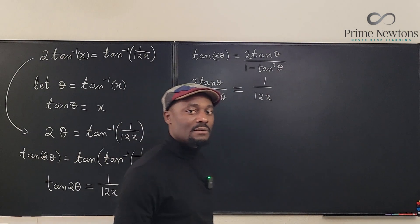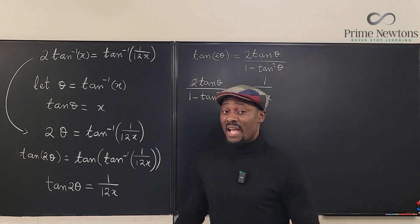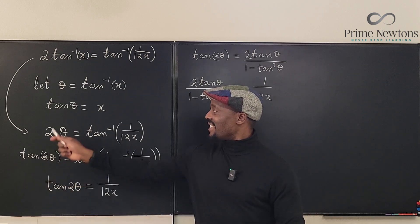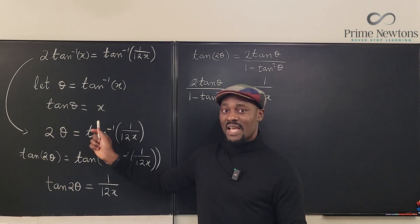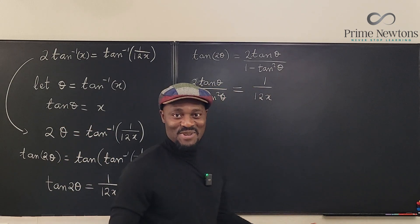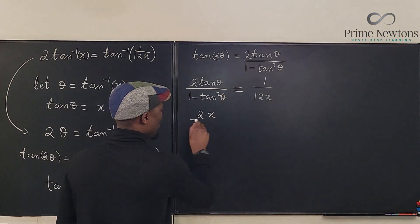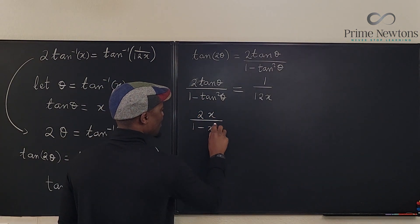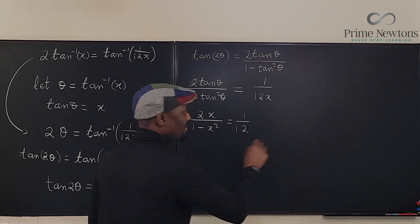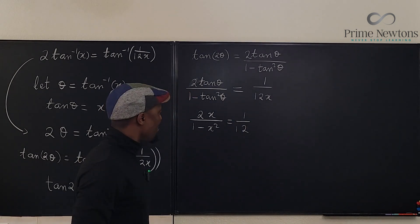Now tell me what is tan theta? Go back to the beginning. Remember that substitution I made. I said tan theta is equal to x. There we go. So I can come here and say 2x over 1 minus x squared equals 1 over 12x. And everybody can solve this. Right?